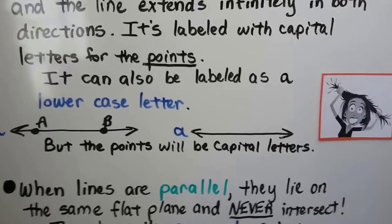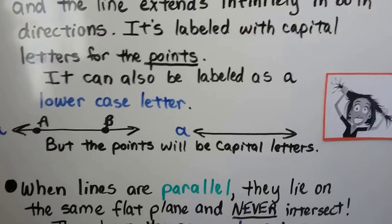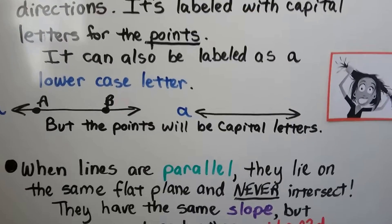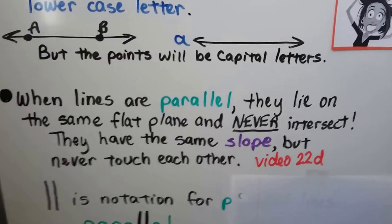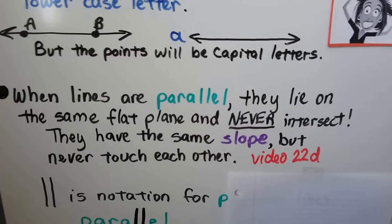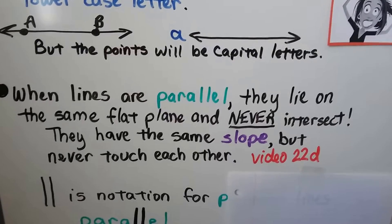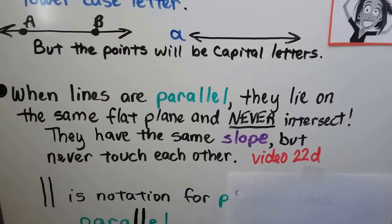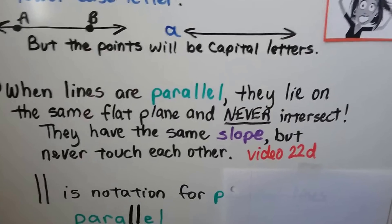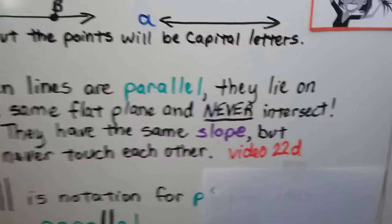I know that could drive you crazy, but you'll understand when you see the diagrams. When lines are parallel, they lie on the same flat plane and never intersect. They have the same slope. We learned about slope in video 22d, the slope of a line.